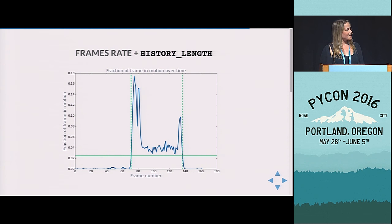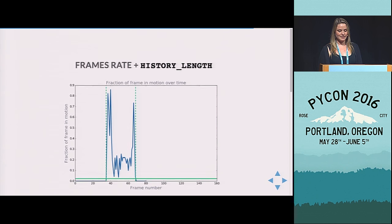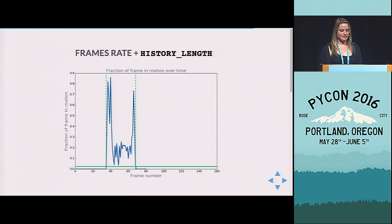So this one's kind of obvious. The history length, if we're looking at the number of frames that it lasts, it's going to change. This is what our original fraction of motion looked like over time. And then here's what it looks like in terms of frame number when we reduce that frame rate. So you're going to want to adjust your frame accordingly.